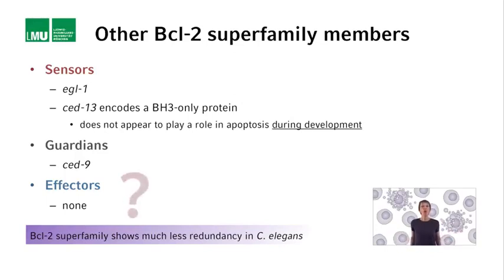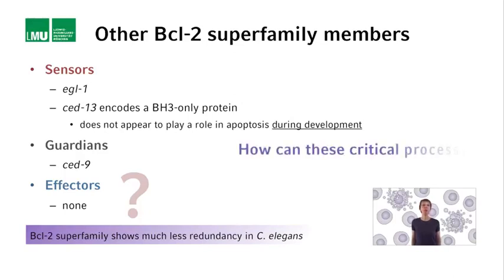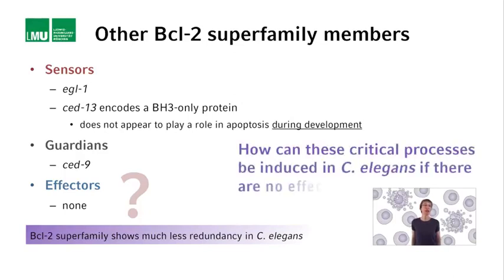But why is there no effector in C. elegans? Once activated by the sensors, either indirectly or directly, mammalian effectors induce the processes that are necessary to commit cells to the apoptotic fate. How can these critical processes be induced in C. elegans if there are no effectors? SET9 might actually not only be a guardian, but in certain contexts, also an effector.